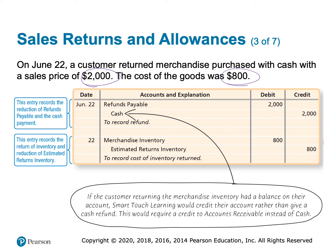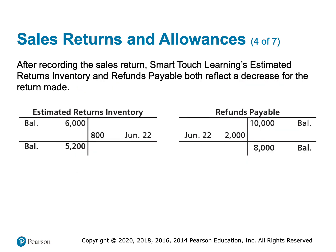We had estimated $10,000 in refunds payable. Now we've given back $2,000, reducing the estimate. If we guess exactly right, refunds payable will be zero at the end. The second entry puts the inventory back: we debit inventory to restore that asset, and credit estimated returns inventory to reduce that asset. We estimated $6,000 of inventory to be returned; so far $800 has come back, leaving $5,200 still expected. If our estimate is wrong, we'll make an adjustment next year during the adjusting entry.